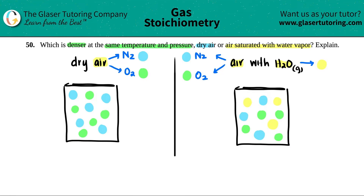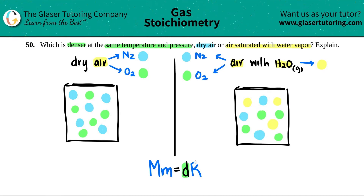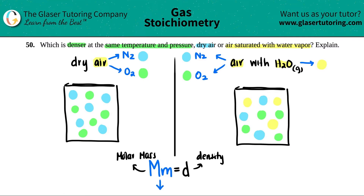We now link this to the density formula: PM = dRT. Since pressure and temperature are the same, and R is constant, we can eliminate those and make a relationship between MM (molar mass) and d (density). Since they are on the same side of a direct relationship, if molar mass increases, density increases, and if molar mass drops, density drops.